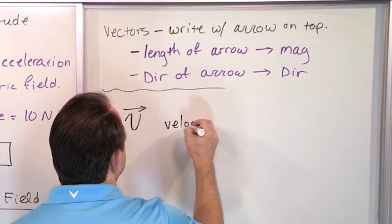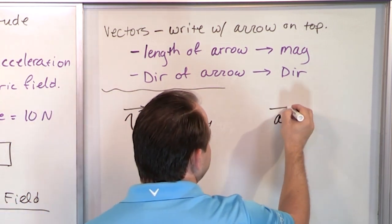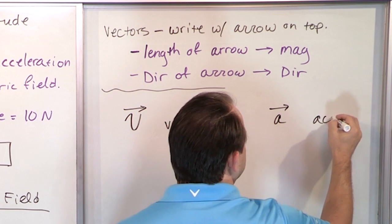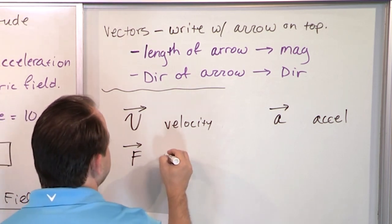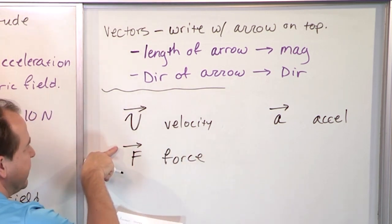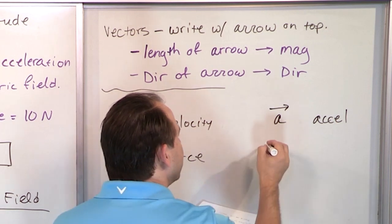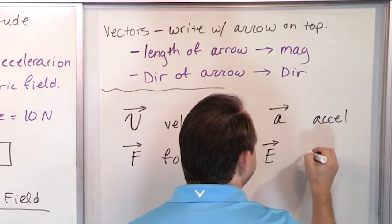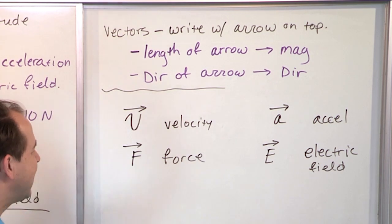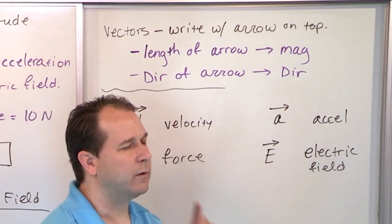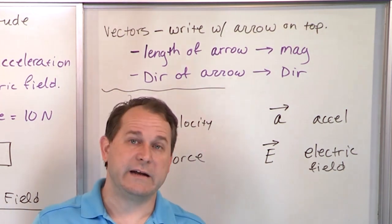That's velocity — vector. If I'm writing an equation for acceleration, which we'll have many equations with, I put a little arrow on top — that's the acceleration vector. If I write down a force, like in Newton's second law, that's a force vector with a little arrow on top. And if I have E with an arrow on top, going back to our electric field, that's an electric field vector quantity. Anytime in an equation you see a letter with an arrow on top, that's a vector. When you see a letter with nothing at all, it's a scalar.